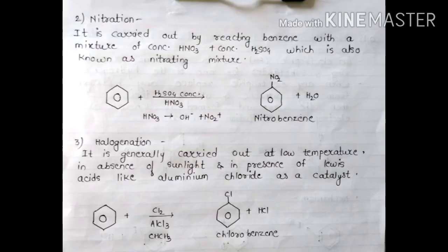Second reaction is nitration. This reaction is carried out by reacting benzene with a mixture of concentrated HNO3 plus concentrated H2SO4, which is also known as nitrating mixture. In this reaction, HNO3 breaks into O minus and NO2 plus. The product obtained will be nitrobenzene, and O minus and one H from benzene will become H2O.